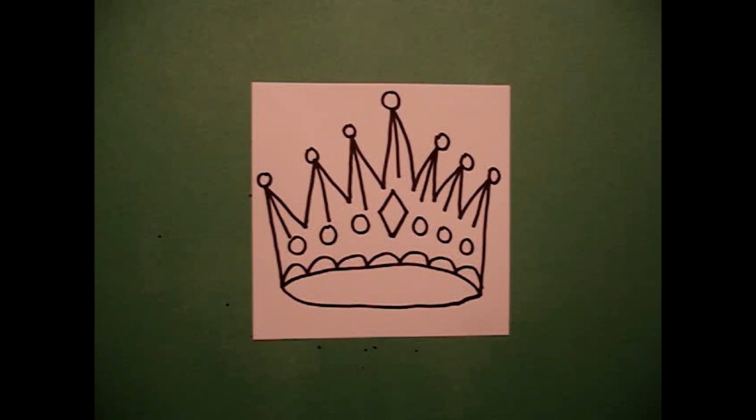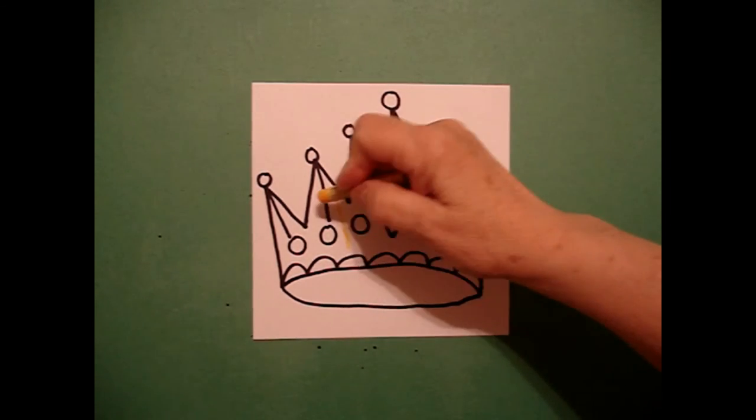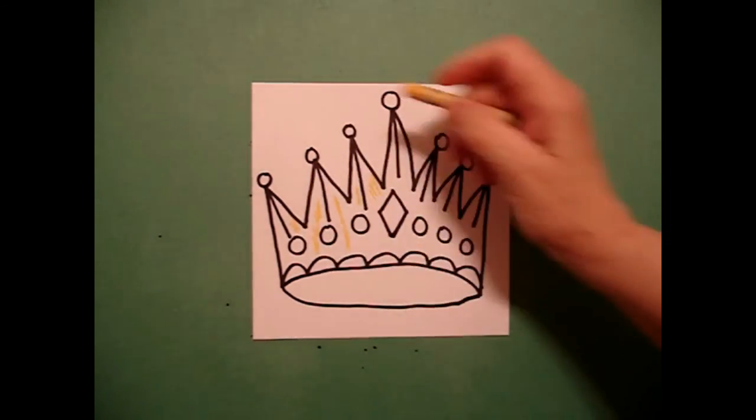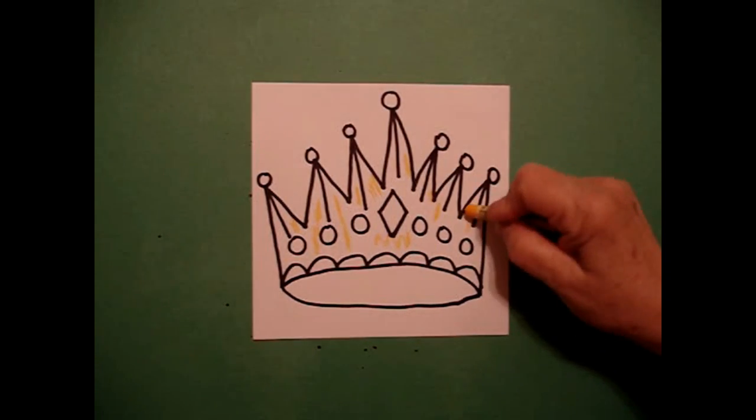Okay, let's see what it's going to look like all colored in. I want my crown to look like it's made out of gold, but I don't have a gold crayon, so I'm going to use my yellow. So color all this section, all these points yellow.